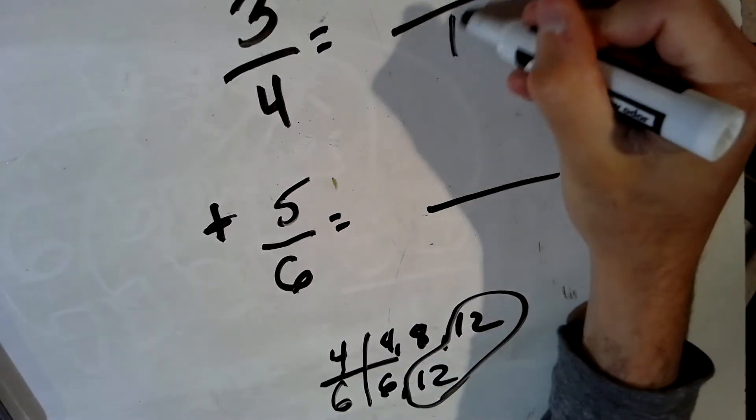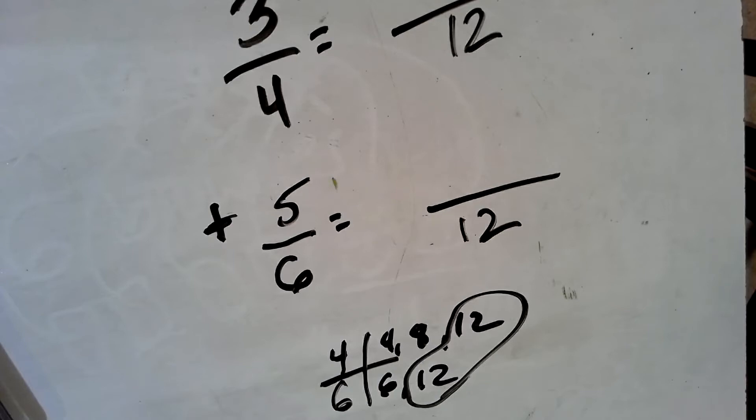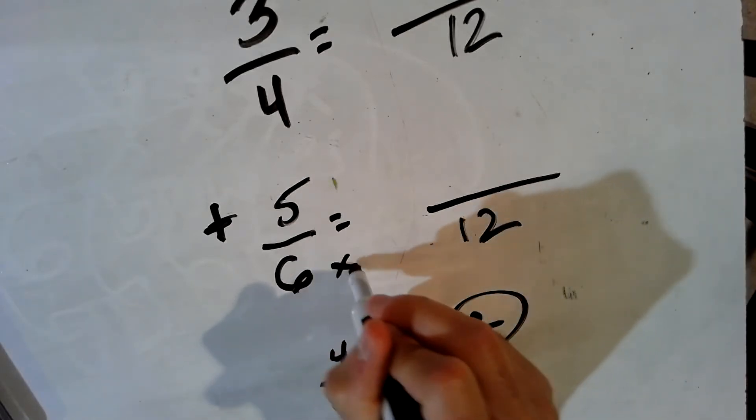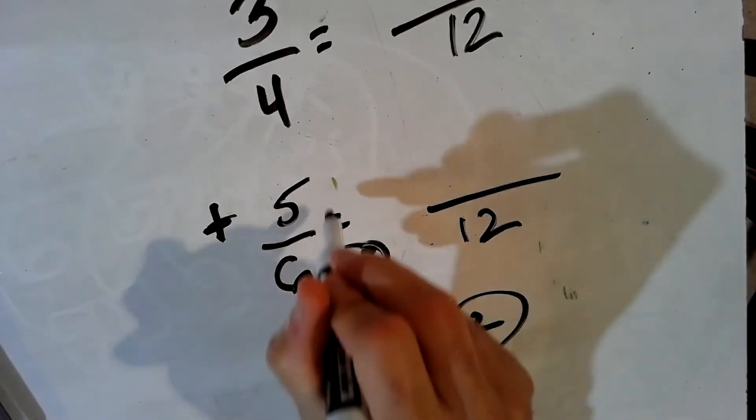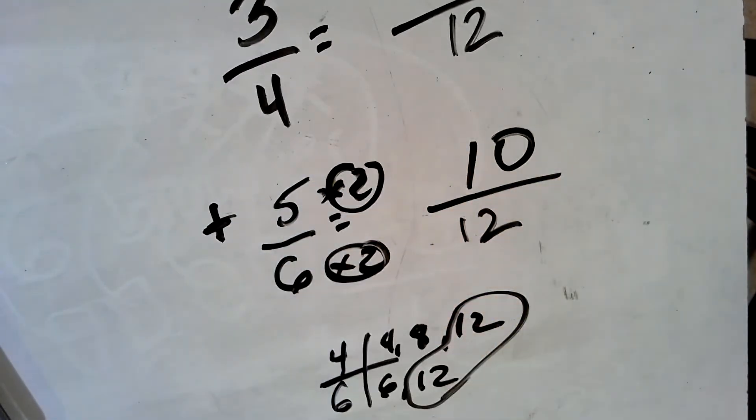So I'm going to make the denominator become 12. That's going to be a common denominator. 6 times 2 gives me 12. So 5 times 2 is 10. 5 sixths is equivalent to 10 twelfths.